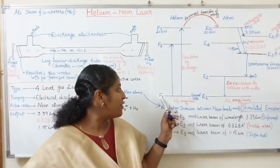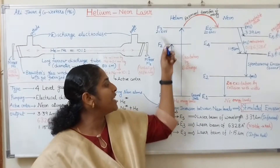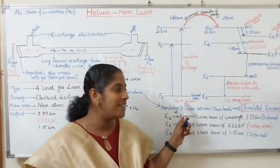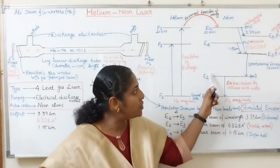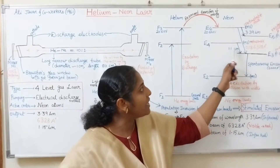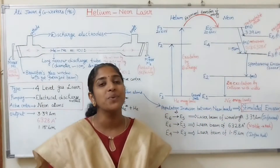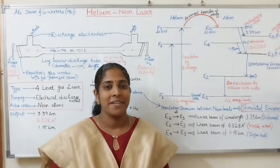Now we can see the working of helium-neon laser. This is the energy level diagram of the helium-neon laser system. Here F1, F2, F3 correspond to helium energy levels. E1, E2, E3, E4, E5, and E6 correspond to neon energy levels.